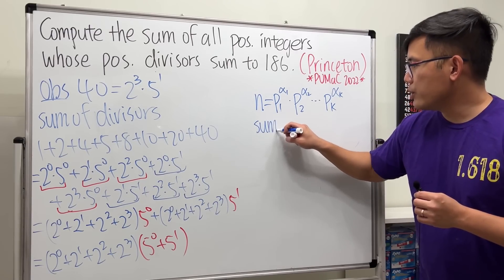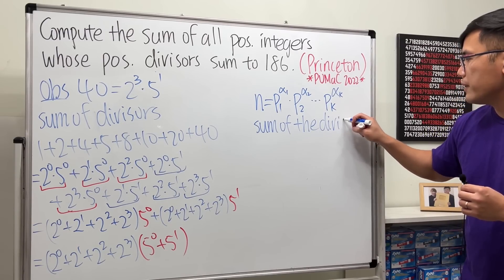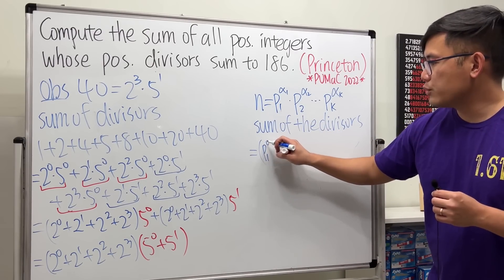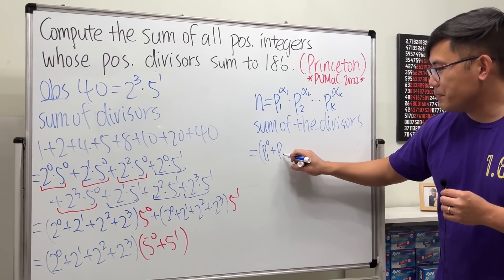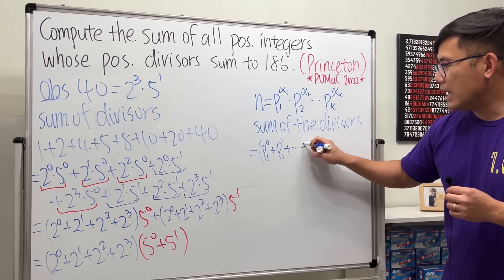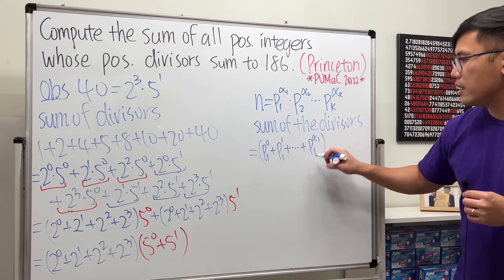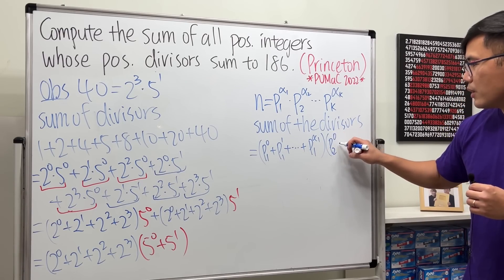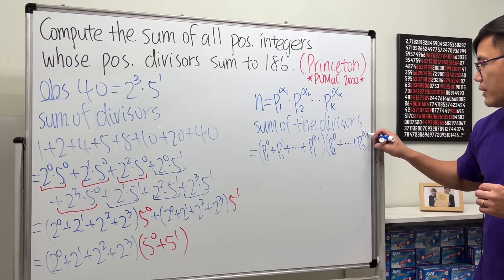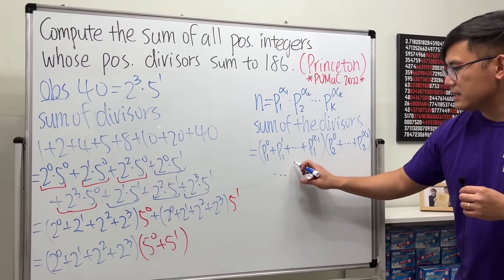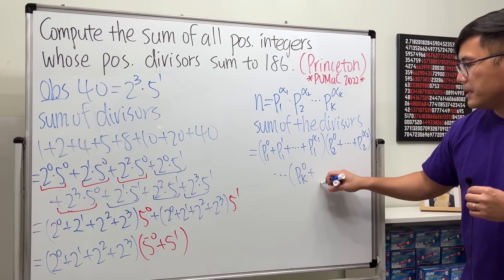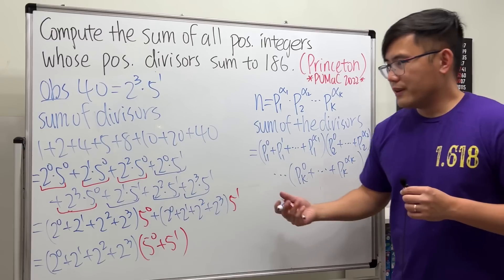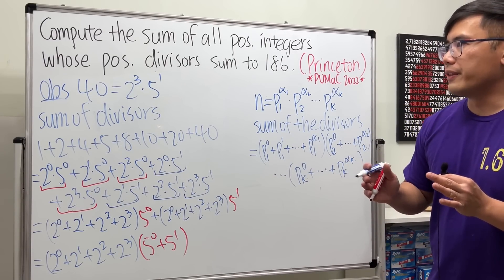Then the sum of divisors of n equals (p₁⁰ + p₁¹ + … + p₁^α₁) × (p₂⁰ + … + p₂^α₂) × … × (pₖ⁰ + pₖ¹ + … + pₖ^αₖ). This is the quick way to find the sum of divisors of a number.